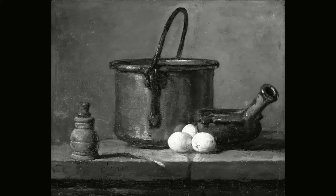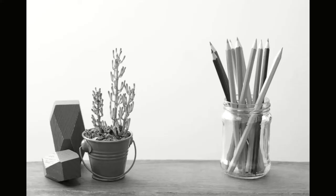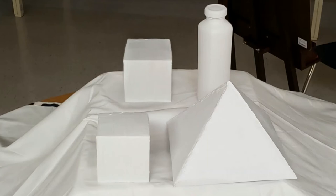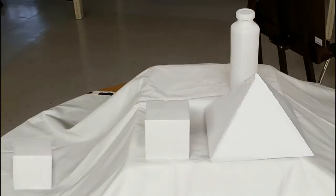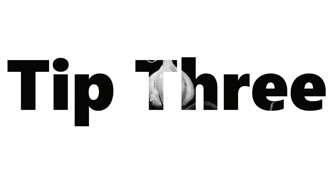The rule of odds doesn't necessarily mean that your composition should only ever have an odd number of objects in it. Instead, it may also suggest grouping objects into odd numbered selections. For example, if you have four objects in your composition, it may be more visually appealing to group three of them together on one side of your composition and isolate the fourth somewhere on the other side. Again, this adds more interest to your artwork by keeping your overall composition from appearing too symmetrical.